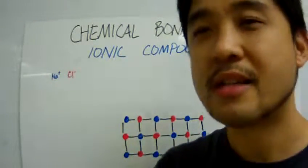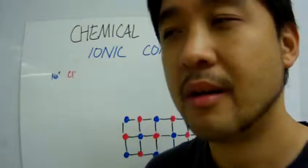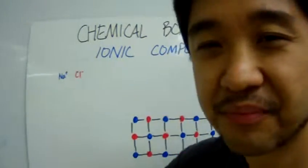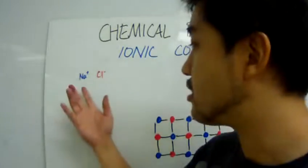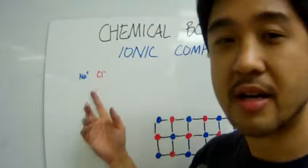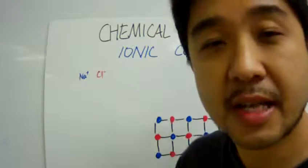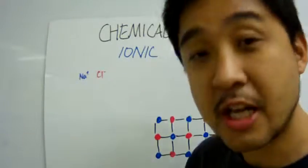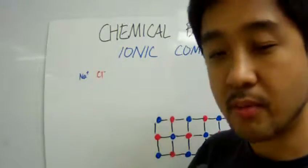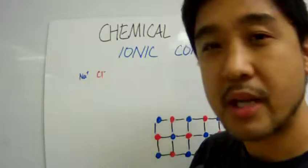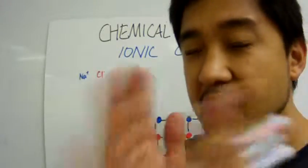So what exactly is in salt? Let's talk about sodium chloride, because that is the scientific name for table salt. Sodium chloride is formed when sodium and chlorine come together and form an ionic bond — we have already studied that.